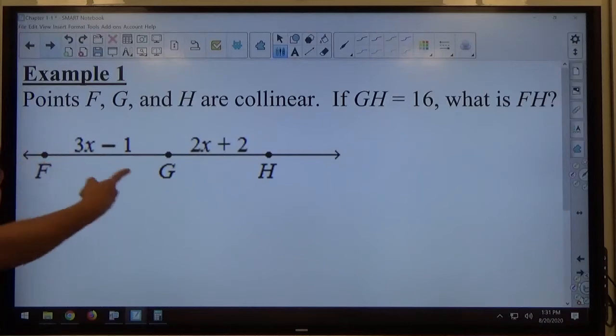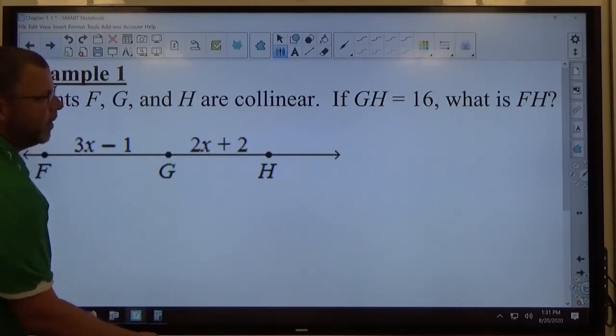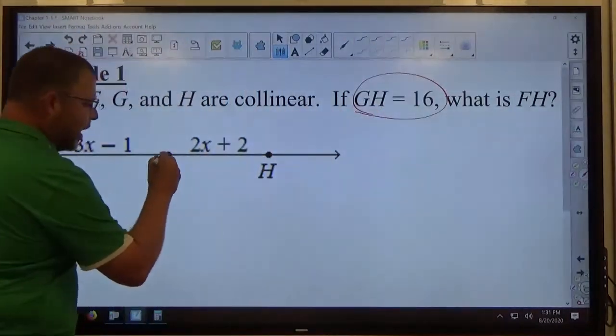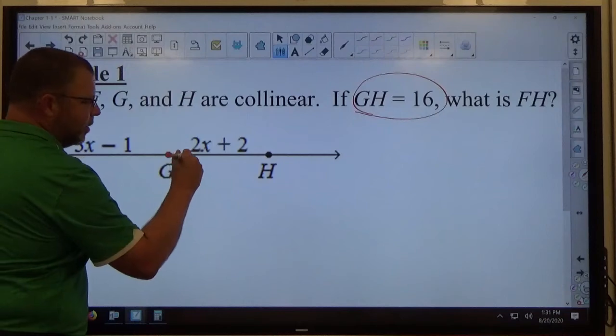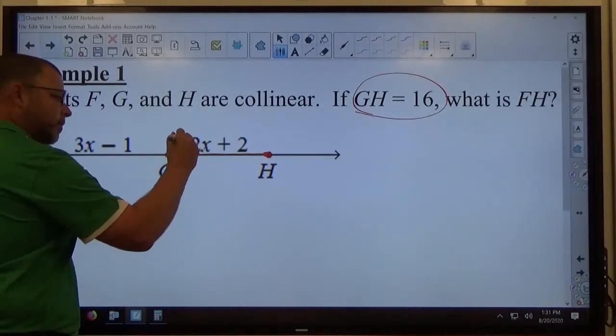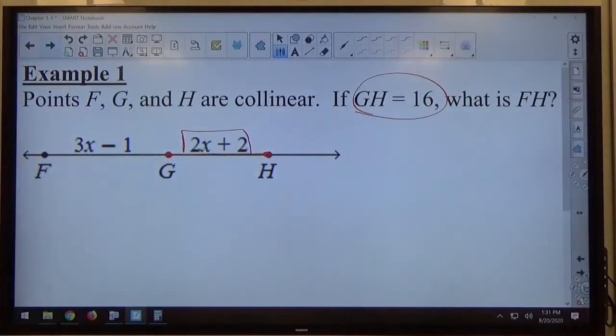G, with my eyes, I can see G is located between F and H, and they tell me this information, that GH equals 16. GH is the distance from point G to point H along the line. Also identified as 2X plus 2.